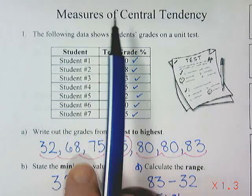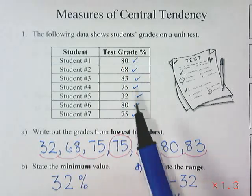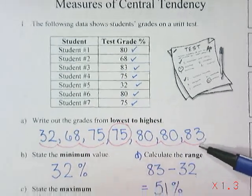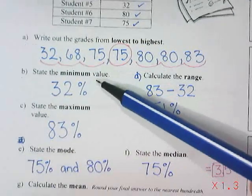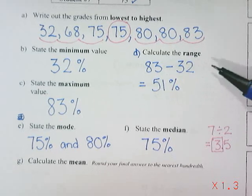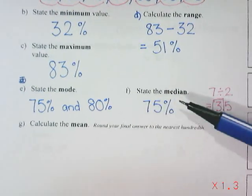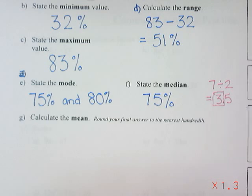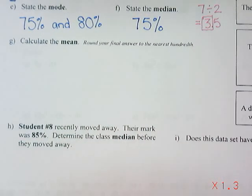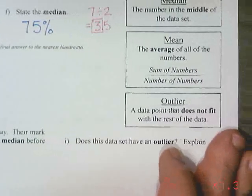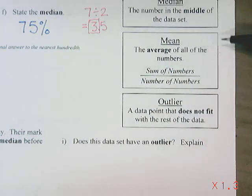This is part two of our lesson on measures of central tendency. Up to this point we have taken our numbers, written them from lowest to highest, found the minimum, the maximum, the range, the mode — we had two modes — and the median. Now we are at the point where we are going to calculate the mean. The mean is the average of all the numbers.